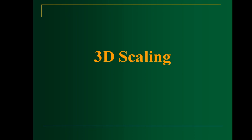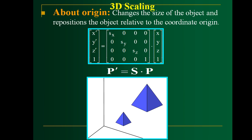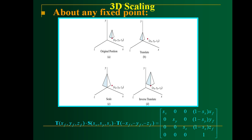Now let us move to scaling. Here you have general scaling and scaling with respect to a fixed point. The matrix representation for normal scaling is similar to what you have seen in 2D scaling. For scaling with respect to a fixed point, you have an additional Z axis. The same sequence of steps is followed: first move the fixed point to the origin, then perform scaling with respect to the origin, then inverse translate to move the point back to its original position. The corresponding matrix is given.